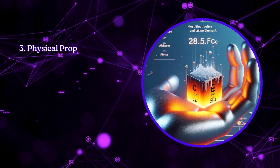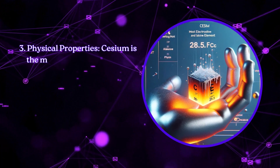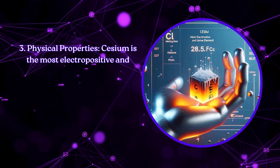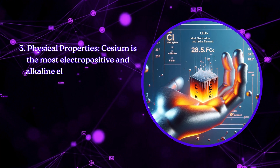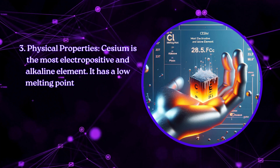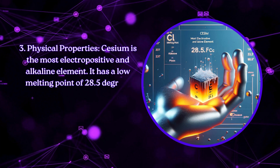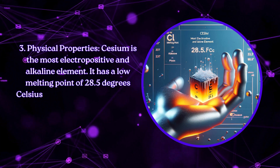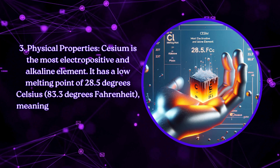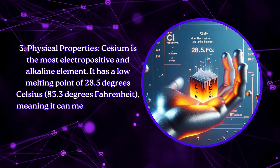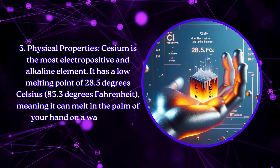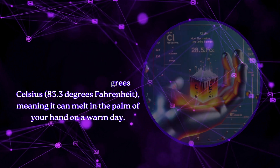Physical Properties: Caesium is the most electropositive and alkaline element. It has a low melting point of 28.5 degrees Celsius (83.3 degrees Fahrenheit), meaning it can melt in the palm of your hand on a warm day.